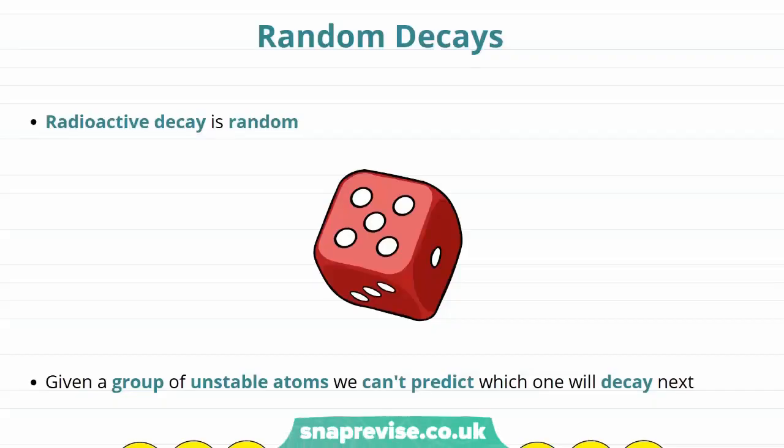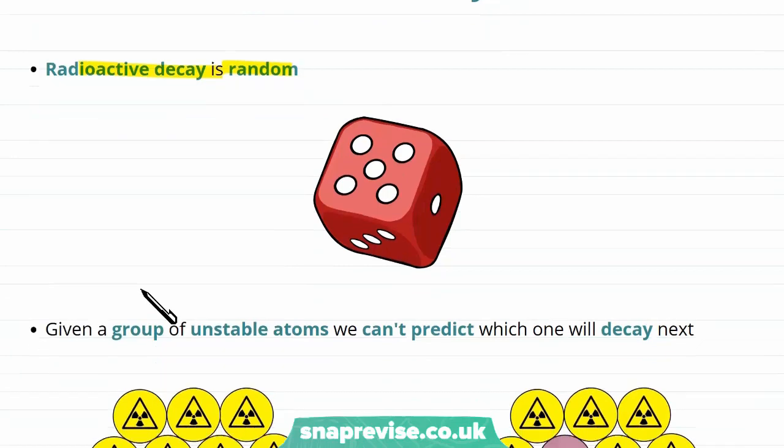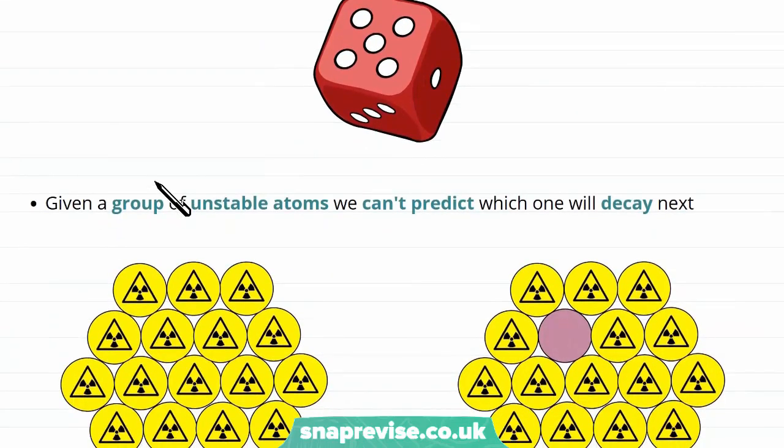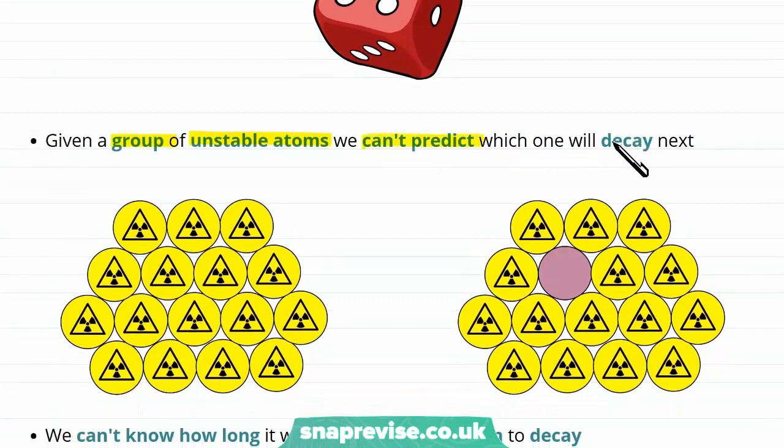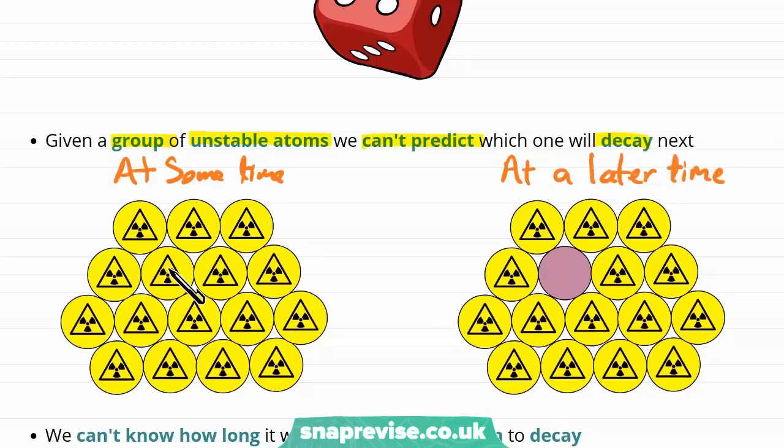To start with, in this video we're going to focus on how radioactive decay is a random process. So let's try and explain exactly what we mean by this. For example, given a group of unstable atoms, we can't predict which one of them will decay next. So let's say we're looking at a group of atoms at some time, and then again at a later time. We see that from the first time to the second time this atom here decayed.